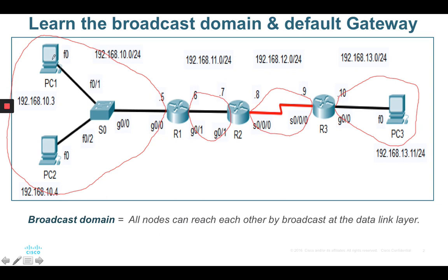PC1 to PC2 belongs to the same broadcast domain, which is the same network connecting to 192.168.10.0. Router 1 to Router 2 will have a different network configured as 192.168.11.0. Router 2 to Router 3 will have another network which is 192.168.12.0, and Router 3 to PC3 will be configured as 192.168.13.0.